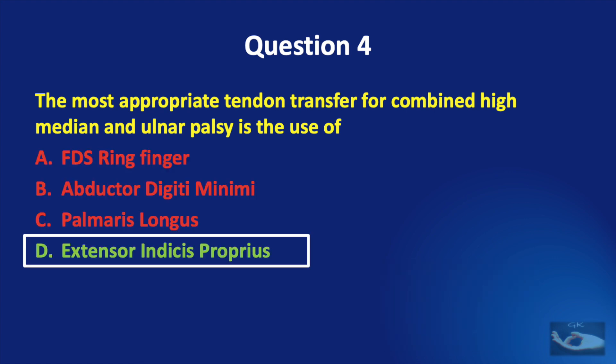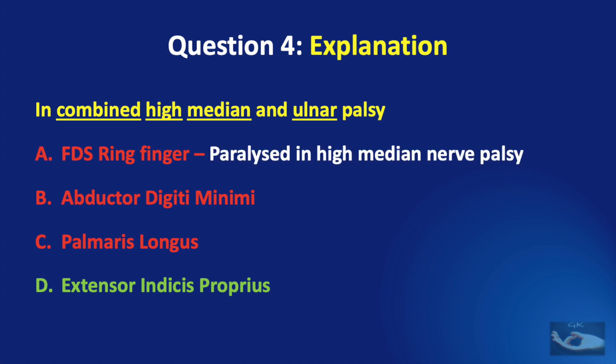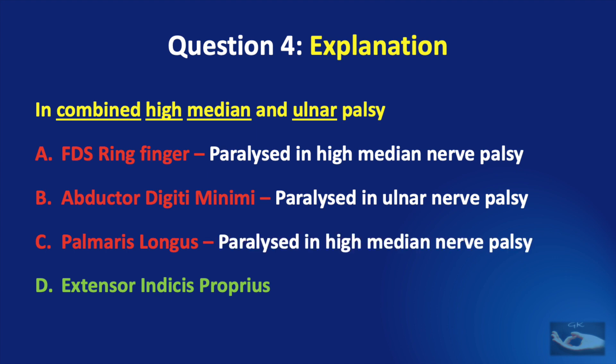The correct answer is the extensor indicis proprius. In combined high median and ulnar palsy, though opponensplasty can be done using any of the four choices, the FDS of the ring finger would be paralyzed in high median nerve palsy, the abductor digiti minimi would be paralyzed in ulnar nerve palsy, and the palmaris longus would also be paralyzed in high median nerve palsy. Hence, the extensor indicis proprius is the most appropriate tendon transfer in a combined high median and ulnar nerve palsy.